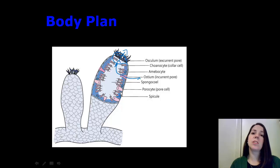such as the type that you would use in the bathtub, are made of spongin, which is a network of flexible protein fibers. These sponges are used as natural bath sponges.